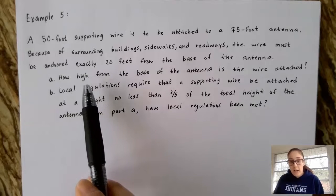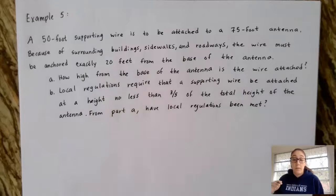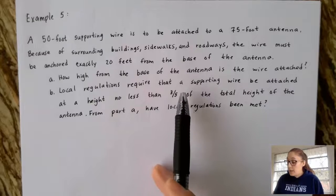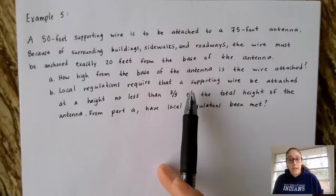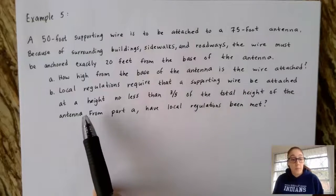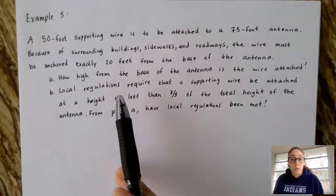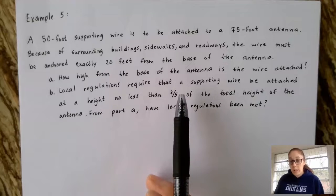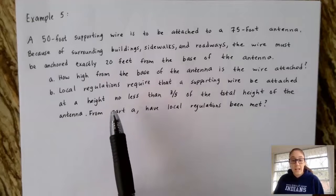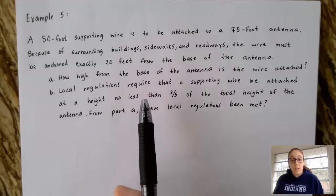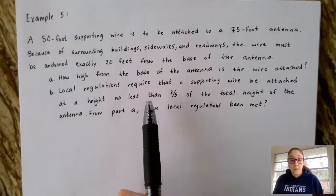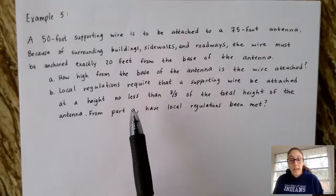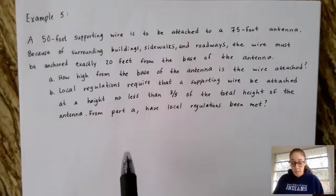Part A is asking how high from the base, so that would be the very bottom of the antenna, is the wire attached. And then Part B says local regulations require that a supporting wire be attached at a height no less than three-fifths of the total height of the antenna. From Part A, have local regulations been met?